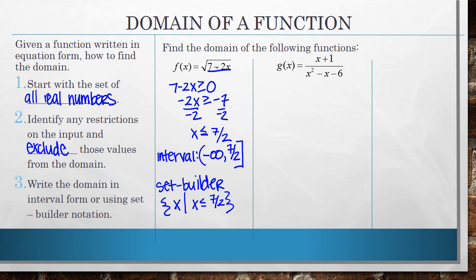So here I have a rational function. And that's where I have, it's basically written as a fraction. We're going to talk about rational functions in depth once we hit chapter 3. But if I start with the set of all real numbers and then identify any restrictions. So the only time that this function is going to be undefined is when the denominator equals zero. Because we cannot divide by zero.